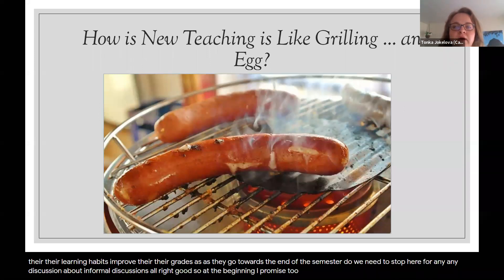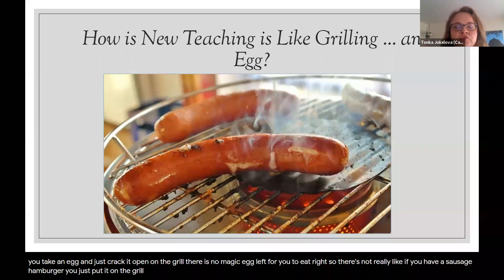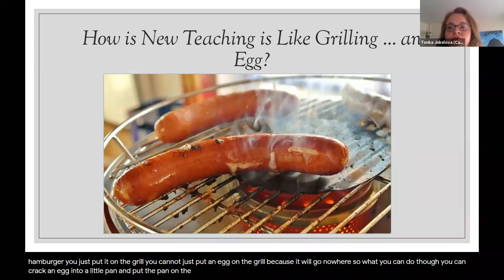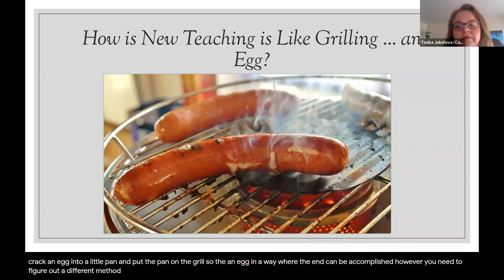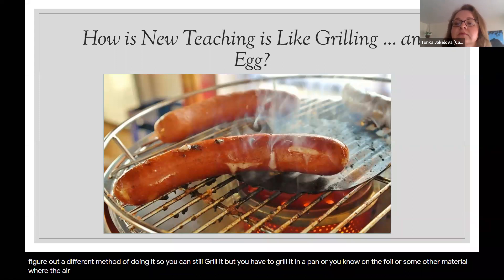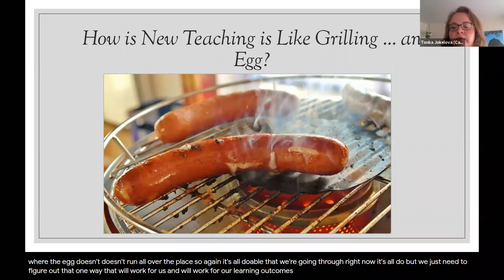At the beginning, I promised to tell you how new teaching is like grilling an egg. If you take an egg and just crack it open on the grill, there's not much egg left for you to eat. Unlike a sausage or hamburger that you can just put on the grill, you cannot do that with an egg — it will go nowhere. But what you can do is crack the egg into a little pan and put that pan on the grill. So the new teaching is like grilling an egg in the sense that the end goal can be accomplished, but you need to figure out a different method of doing it. You can still grill it — you just have to grill it in a pan, or on foil, or some other material where the egg doesn't run all over the place. It's all doable. We just need to figure out that one way that will work for us, our learning outcomes, and our students.